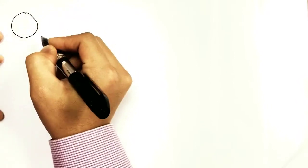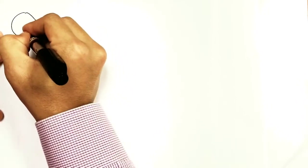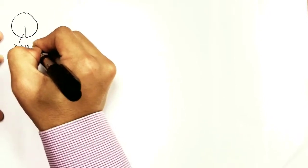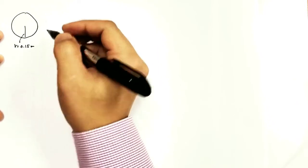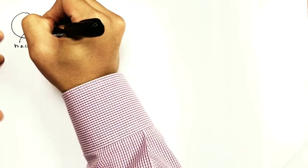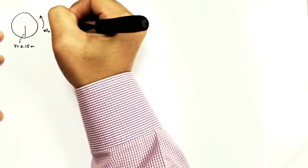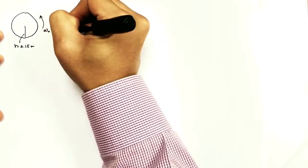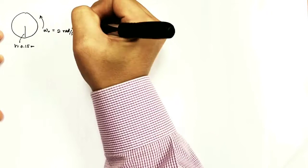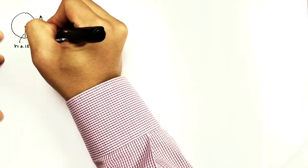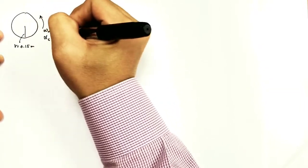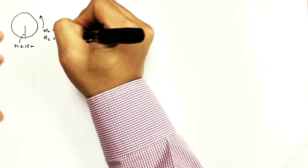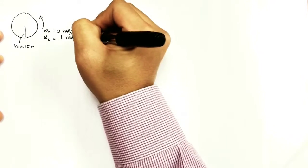For this problem, let's first do some drawing to get some sense of what's going on. It says that the radius is r equals 0.15 meter. Then it rotates with initial angular velocity, so omega-zero equals 2 radian per second. We have angular acceleration, which is alpha — this is constant — equals 1 radian per second per second.